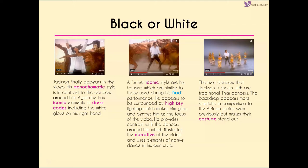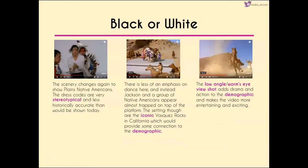The lighting illustrates the narrative because Jackson uses elements of the native dance within his own dancing, showing there's very little difference between the two. The next dances are traditional Thai dances — the backdrop seems more simplistic compared to the African plains, but the costumes make them stand out. The scenery changes again to show Native American plains; the dress codes are again very stereotypical and less historically accurate than would be shown today.